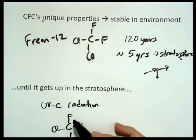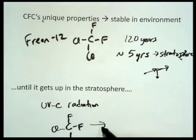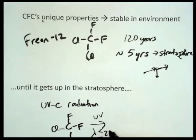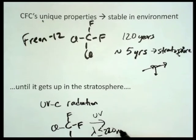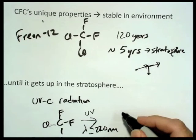And the C-Cl bonds are stronger. So the bond that's broken in the presence of this UV radiation of less than 220 nanometers in wavelength, you end up with this.